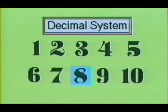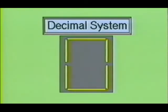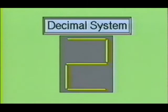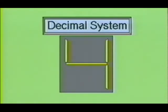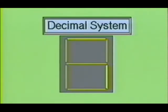You learned that the decimal numbering system uses 10 different symbols. These symbols are 0, 1, 2, 3, 4, 5, 6, 7, 8, and 9.